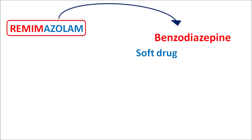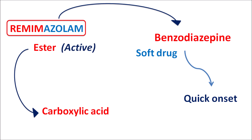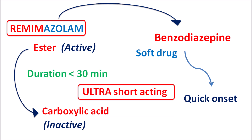Remimazolam is a fused benzodiazepine and is considered a soft drug. It is given by IV route, so it has a quick onset of action. This drug is available as an ester form, which is hydrolyzed to produce a carboxylic acid. The ester is the active form, whereas the carboxylic acid is the inactive form. Because of this, remimazolam is short-acting with a duration of action less than 30 minutes — an ultra short-acting benzodiazepine indicated for induction as well as maintenance of sedation for short surgical procedures.